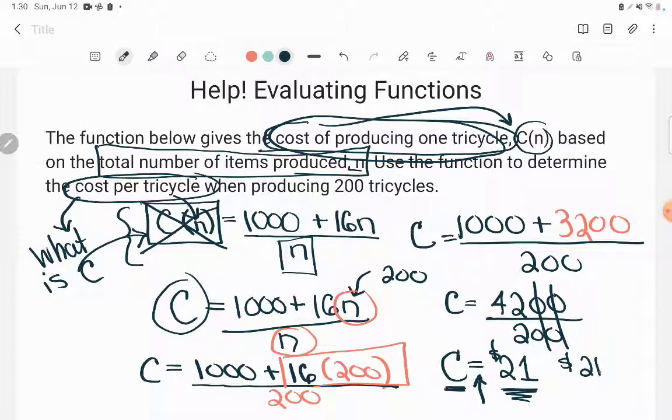That's how much this company will have to pay in order to produce a tricycle. All right. So $21 to produce each one if I produce 200 of them. All right. If you have any questions about this or any other GED math concept, be sure to drop it in the comments and I'll do my best to answer it.